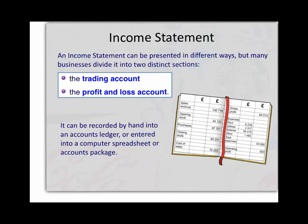Or how much it cost us to buy them from our supplier. The profit and loss account, the second part of the income statement, is simply the calculation of net profit after the day-to-day costs or expenses of running the business have been taken away from your gross profit.